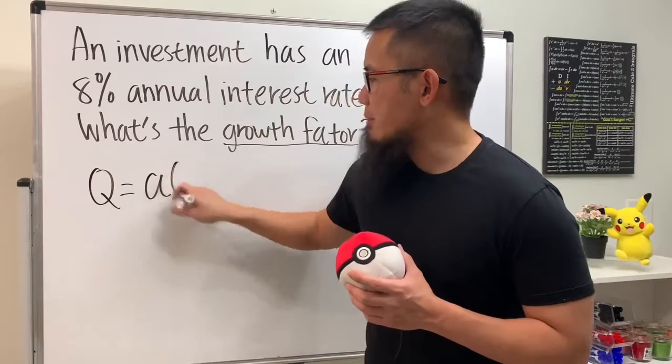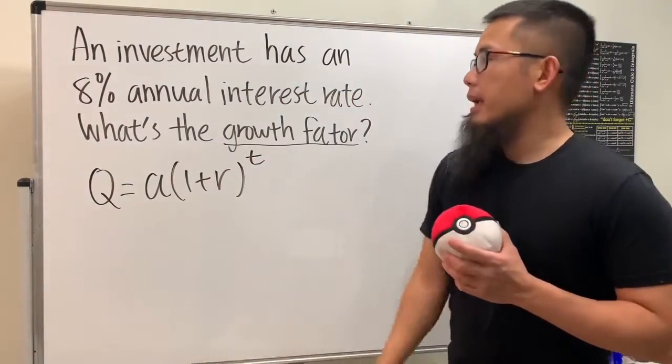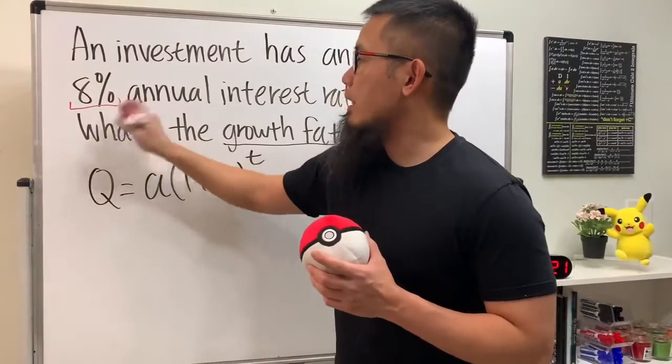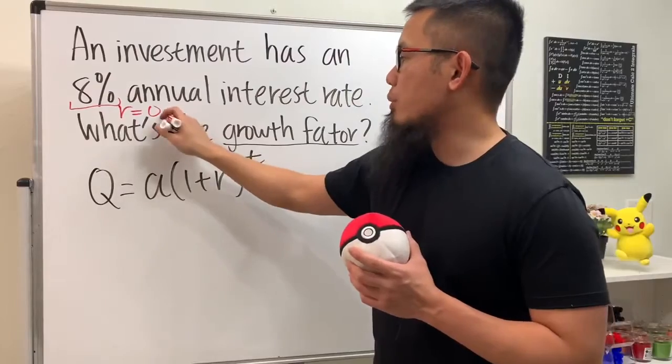is equal to a times (1 + r) raised to the t power. Okay, and when we have the 8% right here, this tells us r is equal to, change that to decimal, you get 0.08.